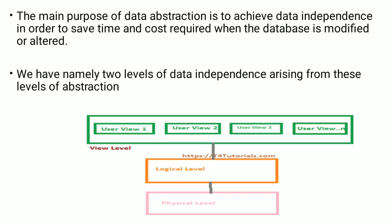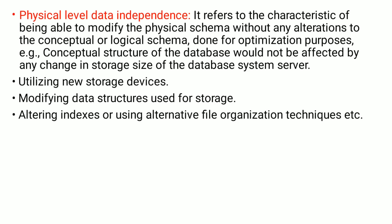The main purpose of data abstraction is to achieve data independence in order to reduce the cost required when the database is modified or altered. We have two levels of data independence arising from these levels of abstraction. Physical data independence refers to the ability to modify the physical schema without any alteration to the conceptual or logical schema, done for optimization purposes. For example, the conceptual structure of the database would not be affected by any change in storage size, utilizing or modifying new storage devices, modifying data structures used for storage, or altering indexes or using alternative file organization techniques.